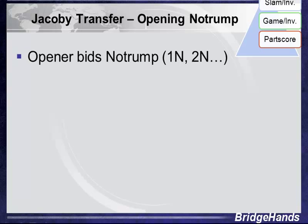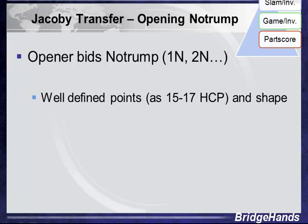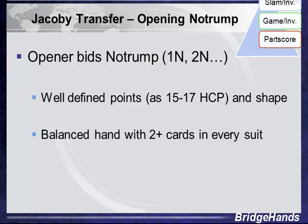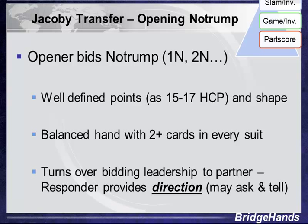Let's begin our Jacoby transfer journey by talking about opening bids. After opener bids one no trump, they have a well-defined hand. Same with opening two no trump — a narrow point range such as 15 to 17, or some play 16 to 18 high card points — and we know the shape: a balanced hand with two cards or more in every suit. As a result, the opener turns over bidding leadership to the responder.